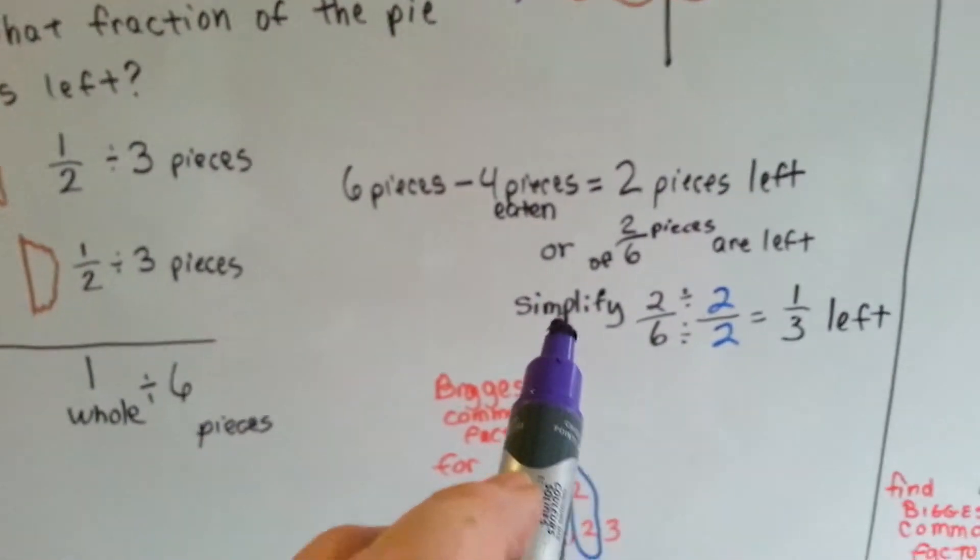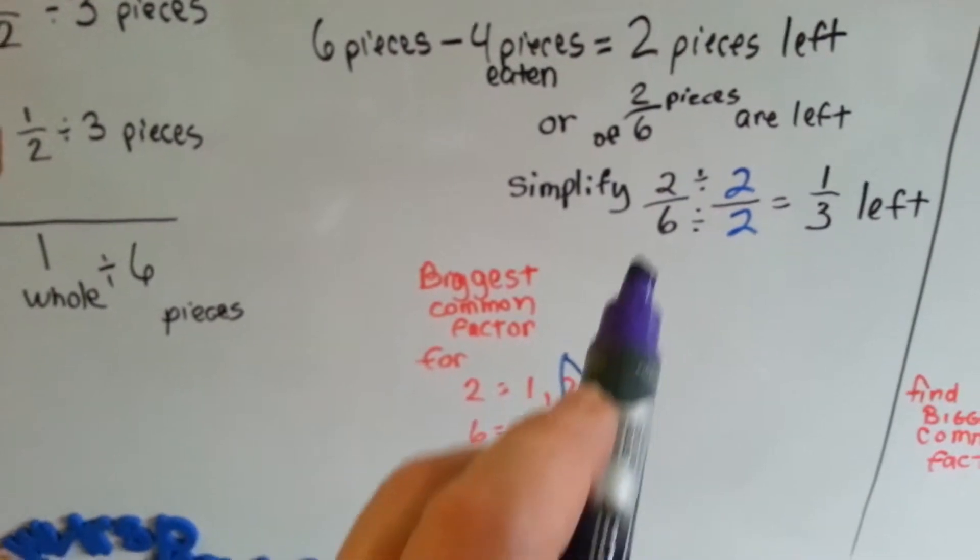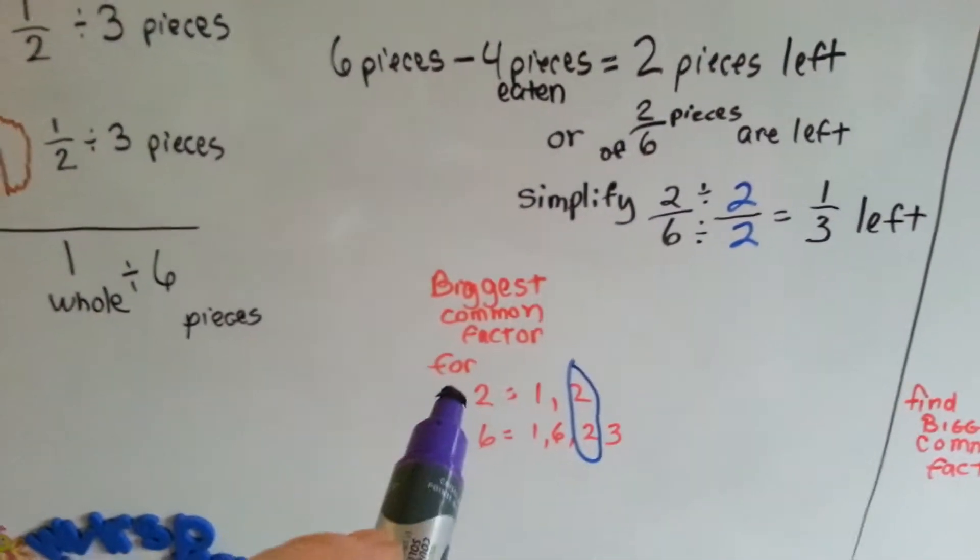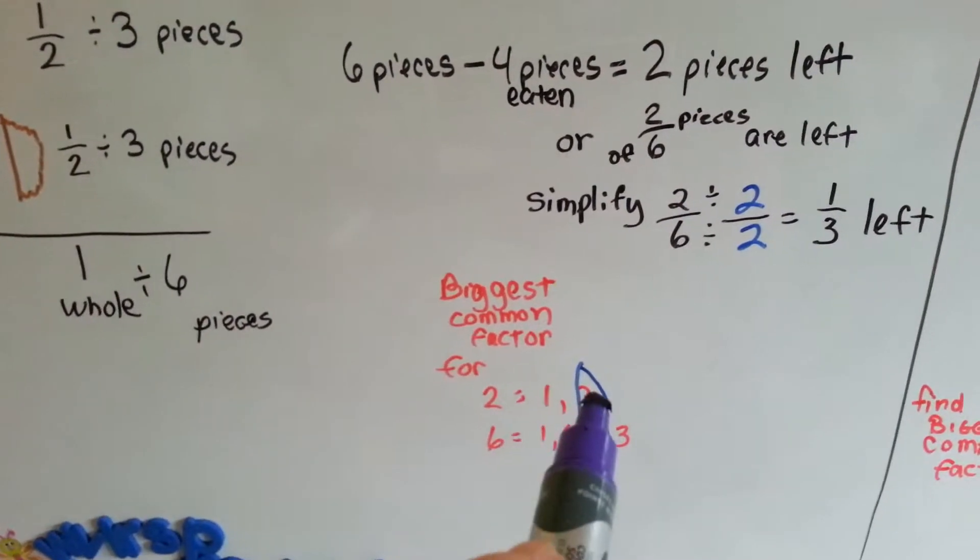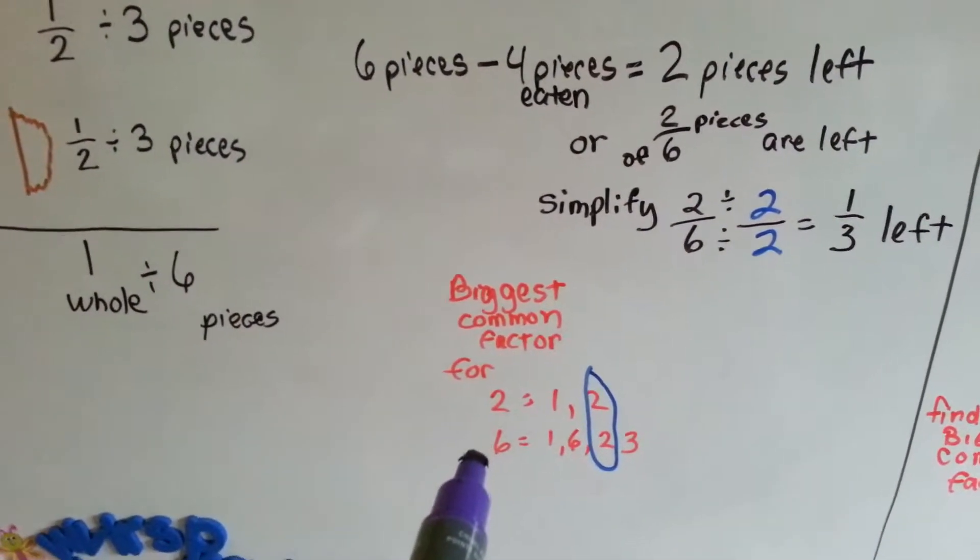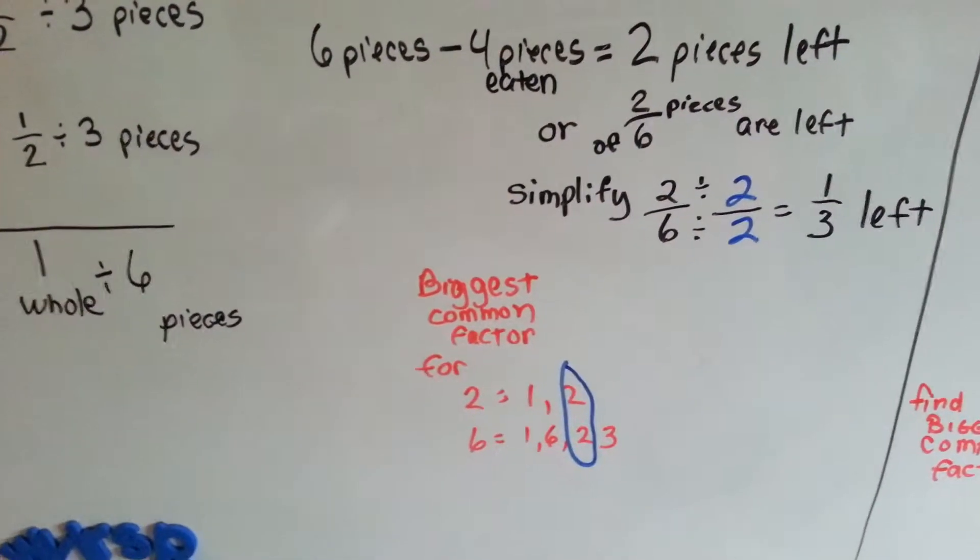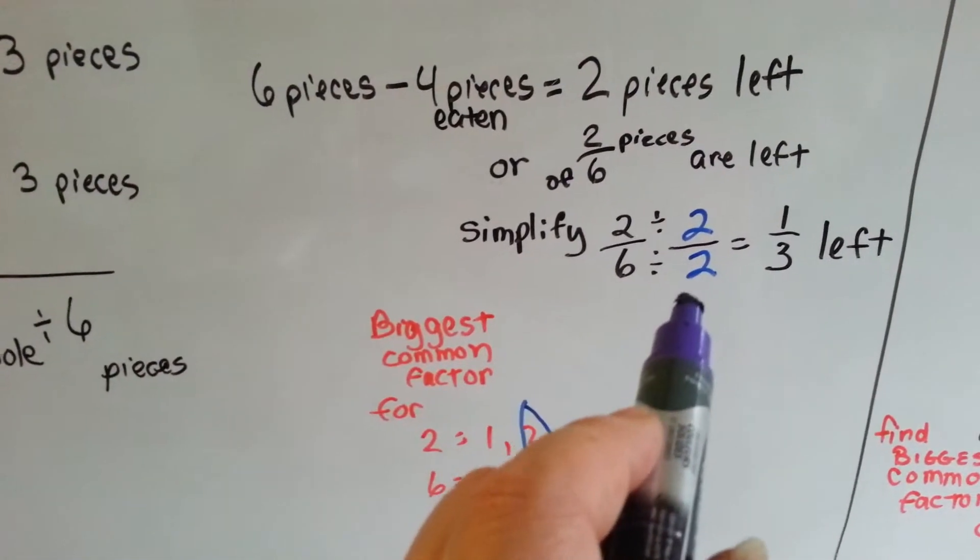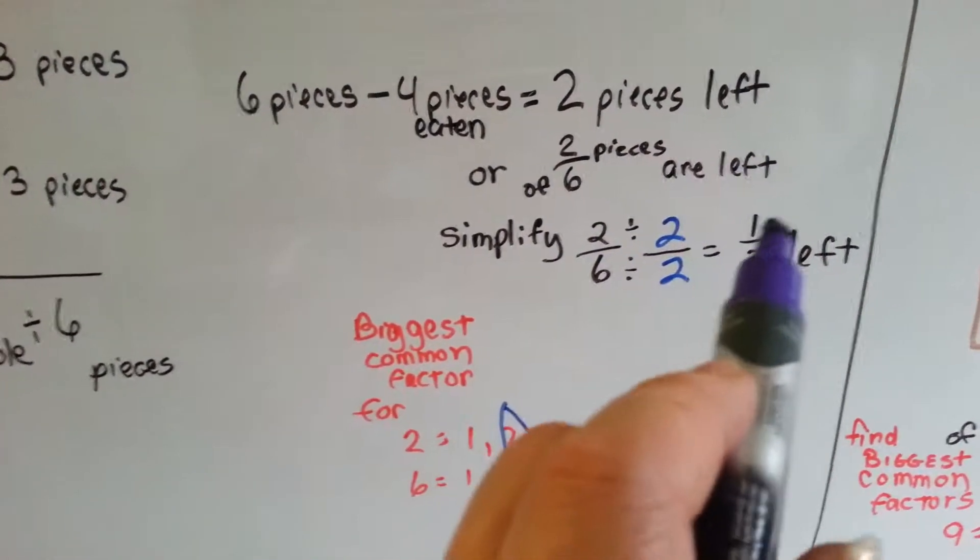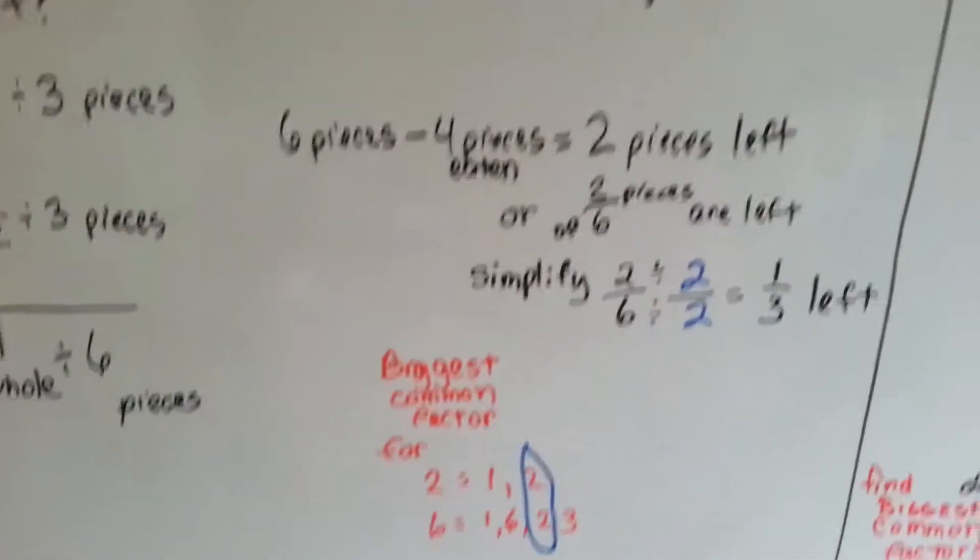To simplify it, we need to find what the common factors are for two and six. What numbers can you multiply together to get two? Well, one and two. What numbers can you multiply together to get six? One times six and two times three. What factor do they have in common? They've got a two. So that's why we're dividing this by two. Two divided by two is one. Six divided by two is three. There's one third left.